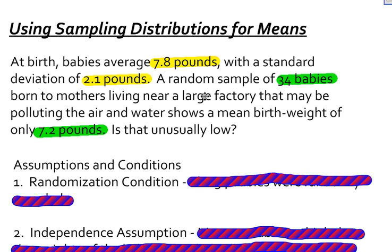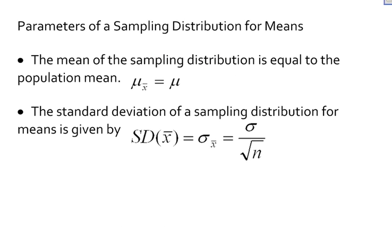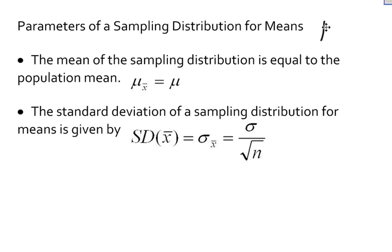There's something we need to note before we move on to the assumptions and conditions. There are a couple of truths or properties we need to look at for sampling distributions. In order to define a model for a sampling distribution, we need a mean and a standard deviation. A sampling distribution takes on a normal model, and since this is a sampling distribution for means, I need a mean and a standard deviation for my sampling distribution.